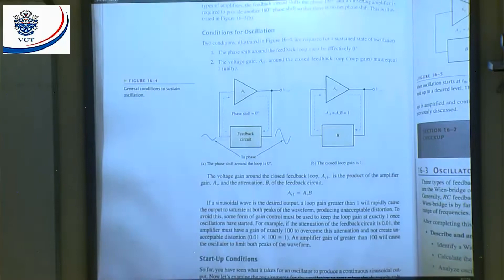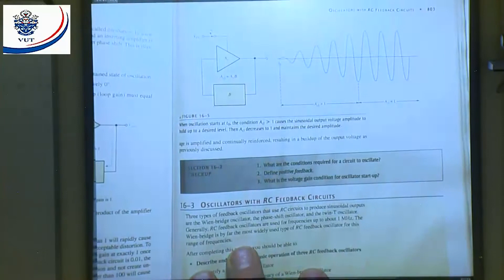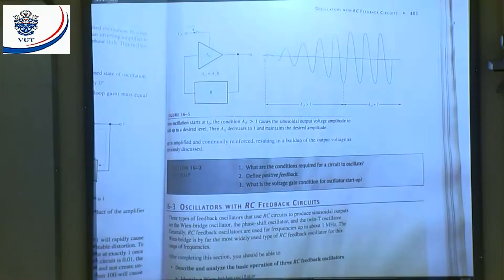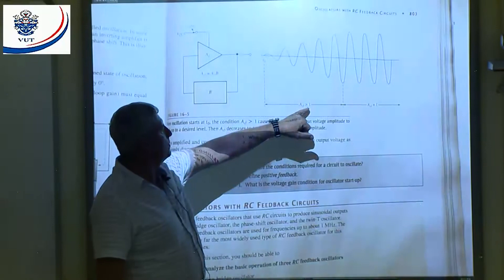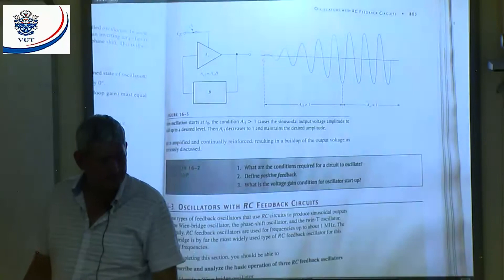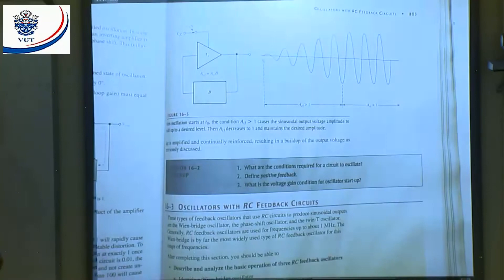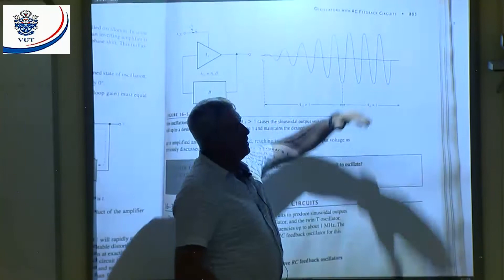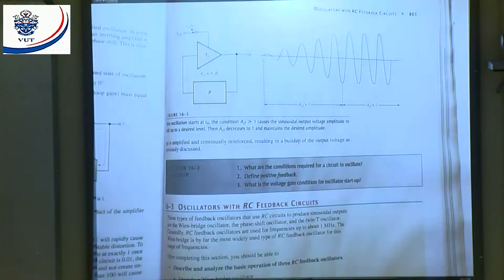Starting-up conditions: if I want to start up the oscillation, I want the gain to be a little bit larger than 1 — the closed-loop gain should be larger than 1 just for starting up. When it starts oscillating, I want my closed-loop gain to be equal to 1. If you make the gain too high, it won't give a sine wave — it will drive into saturation. The top edges will be clipped off if gain is too high.